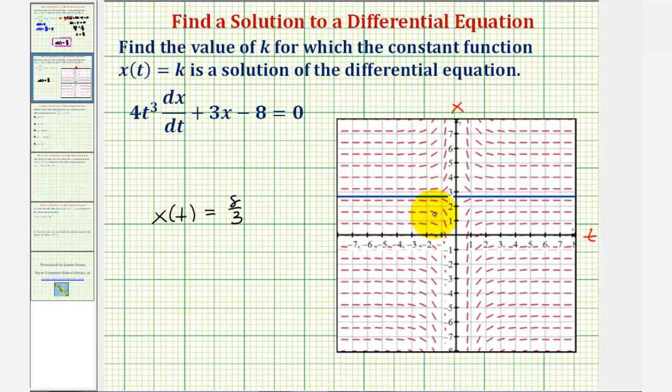Looking at this slope field or direction field, each segment represents the slope of the tangent line at that given value of t. Notice how to the left of -2 and to the right of +2, our horizontal line fits nicely into this slope field, meaning the slope of this horizontal line is zero and the slope of these small segments also look like they're zero.